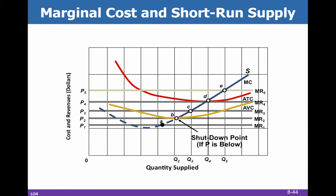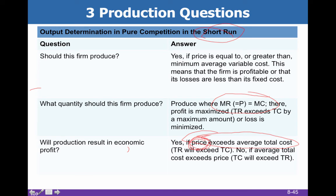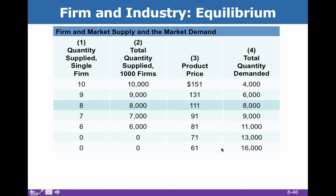We shut down if price is below point B — anywhere down here. So there are three questions: Should the firm produce? Yes, if price is equal to or greater than minimum average variable cost — this is in the short run; in the long run there are no fixed costs at all. What quantity should you produce? Always where marginal revenue equals marginal cost. Will we have economic profit? Only if price exceeds ATC, where price equals the marginal revenue curve and the demand curve.